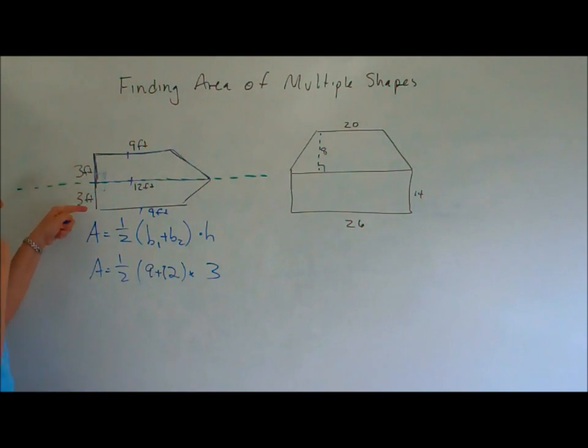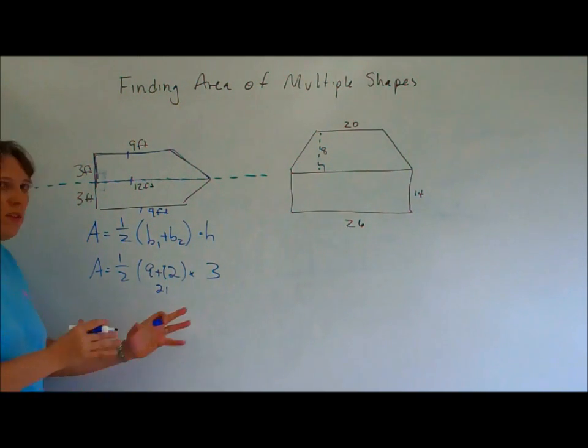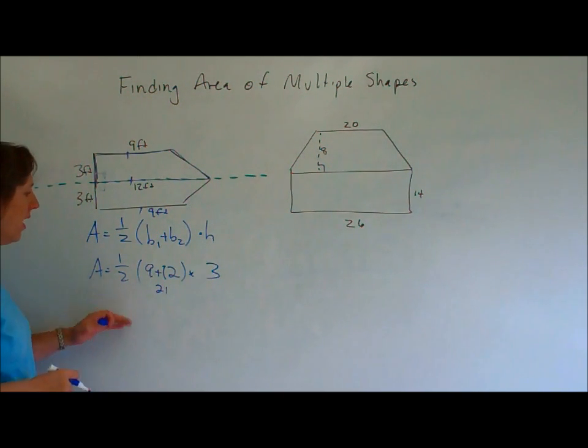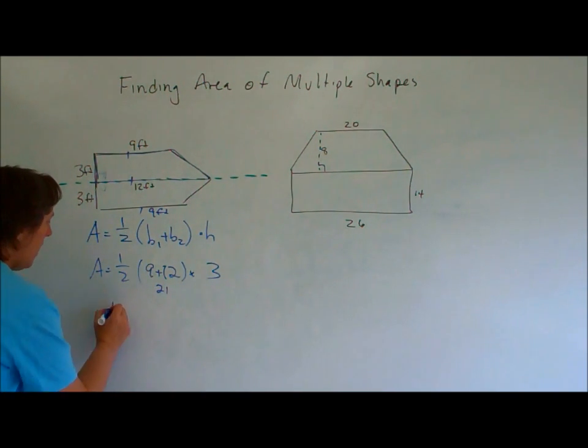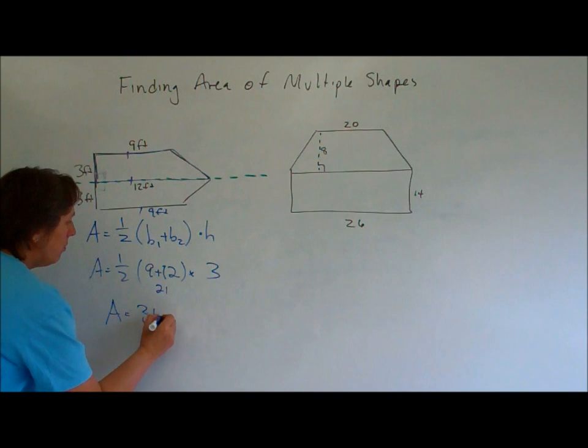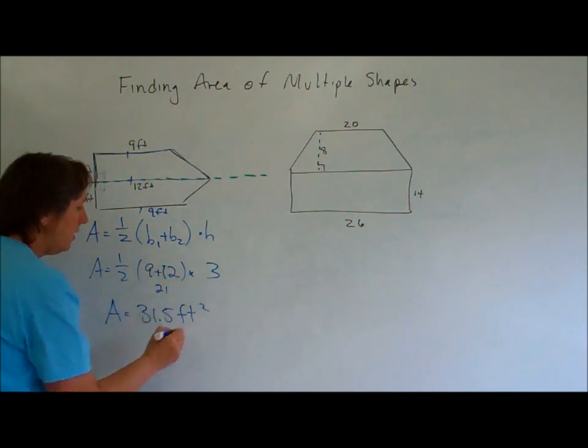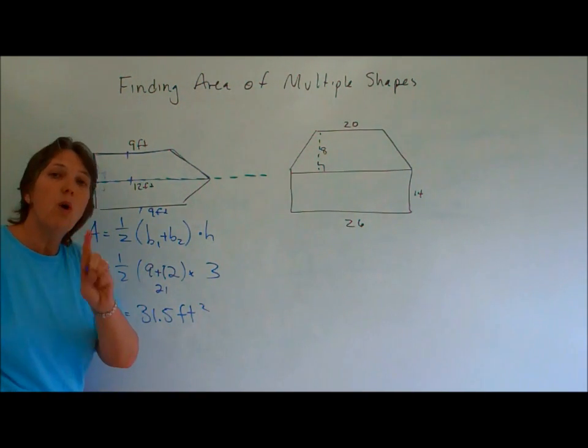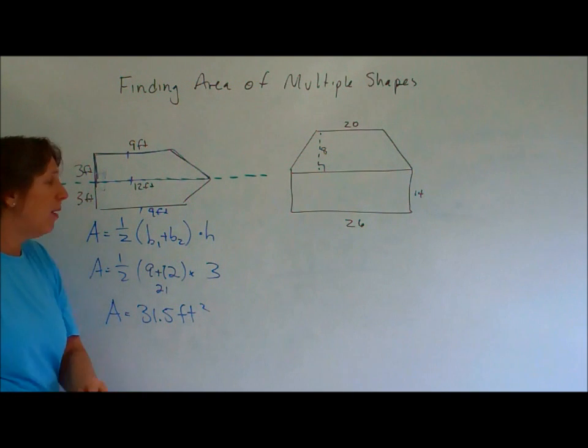So it's nine plus twelve times three. The height is not six. It's three. Okay? So when we simplify this, right here we get twenty-one. Nine plus twelve is twenty-one. You have to show that. Then we're going to plug all this into the calculator. Point five times twenty-one times three. And we get a equals thirty-one point five square feet. That's the area of one of the trapezoids.